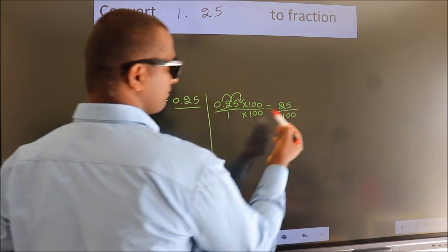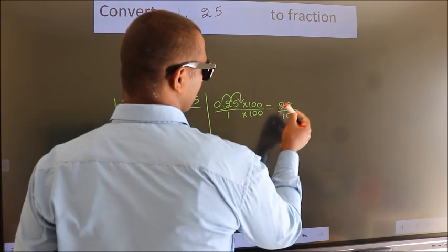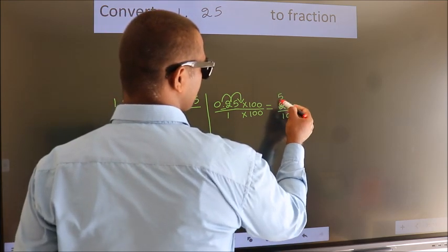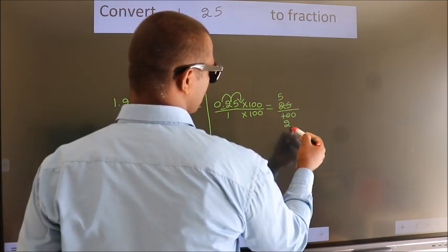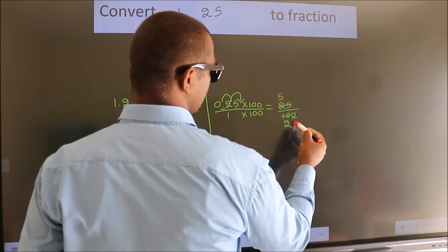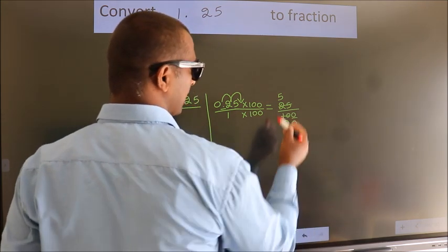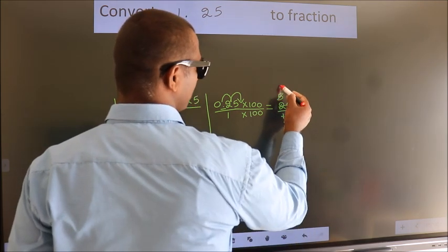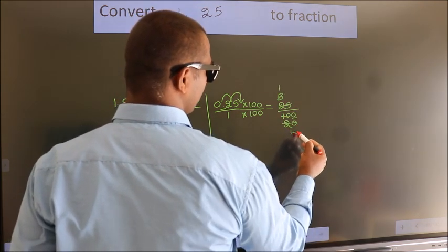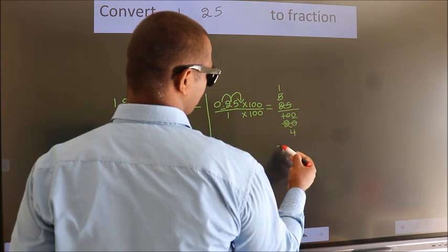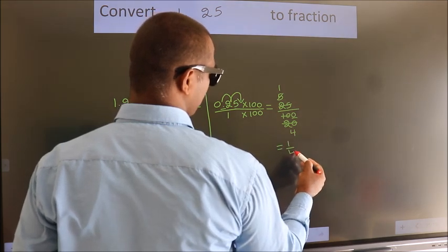Now cancel with 5. Five 5s is 1, five 2s is 2, and 0 stays as is. Cancel with 5 again — five 1s is 1, five 4s is 4. So we get 1 by 4.